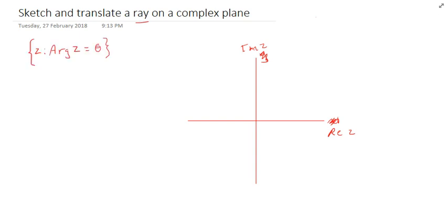to be totally new to you. Here's our new notation: big curly brackets, z argument z equals theta. Theta is the angle between the x-axis in the positive direction. Let's just jump into sketching something like this.